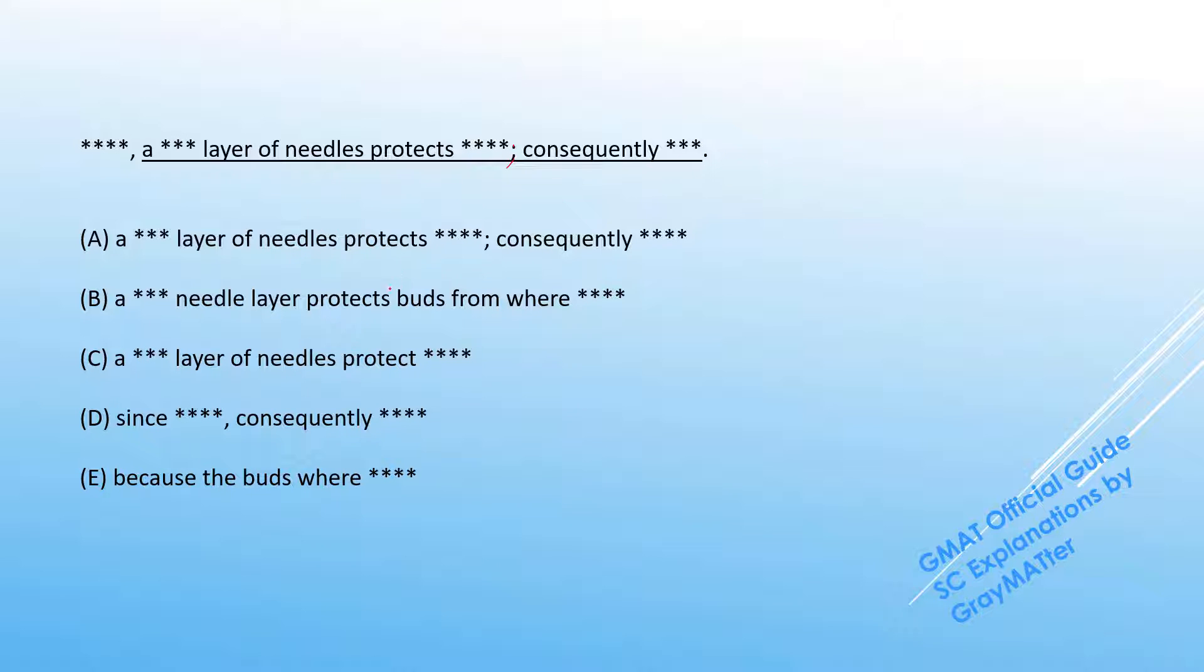When we take a vertical scan through the answer choices, A and B say protects whereas C says protect, and this is a subject-verb agreement trap. When you say a layer of needles, this is a prepositional phrase and the main verb will agree with the main subject here, layer. We're not looking at needles; we're saying that this layer protects. So it is a singular subject and protects is a singular verb. So A and B can work, C cannot. C goes off.